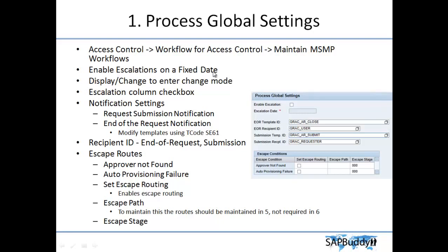The first option is Enable Escalation on Fixed Date. If you click this button, you can key in a date. This means if you want to escalate all pending requests related to the specific process ID you have selected, you can use this option. This is handy when you are making major changes and want to clear all existing requests by a specific date. Otherwise you may not use this, because it will escalate all pending or in-progress requests to that specific date.